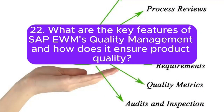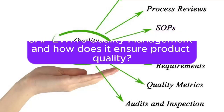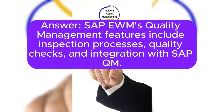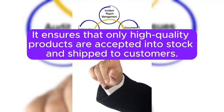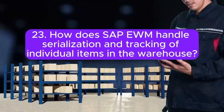Question 22: What are the key features of SAP EWM's quality management and how does it ensure product quality? SAP EWM's quality management features include inspection processes, quality checks, and integration with SAP QM. It ensures that only high-quality products are accepted into stock and shipped to customers.